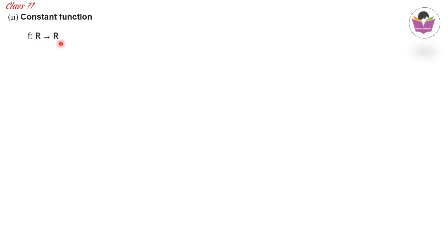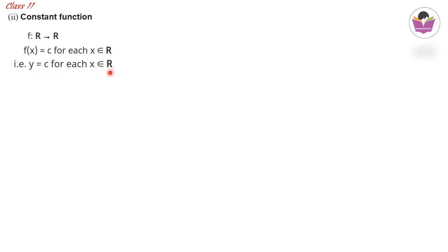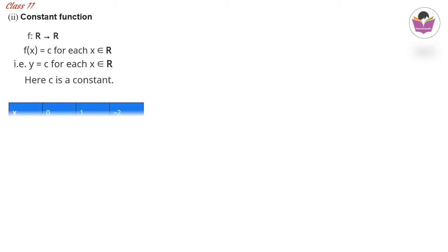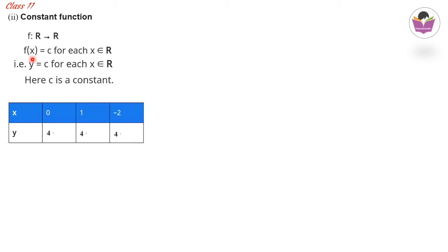The next function is the constant function. f from ℝ to ℝ is defined as f(x) = c for each x ∈ ℝ, where c is a constant. We can write y = c for each x ∈ ℝ. Whatever x value you take, y will always be the constant c.